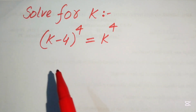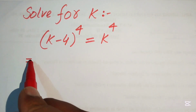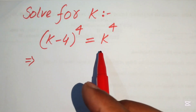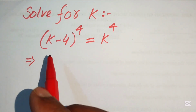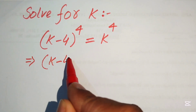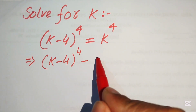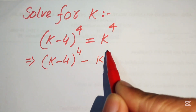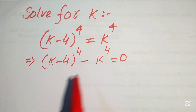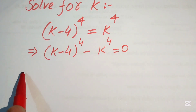The very first step is to move k to the power of 4 to the left-hand side. It will be written as (k − 4)⁴ − k⁴ = 0.